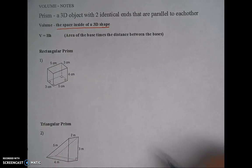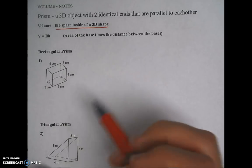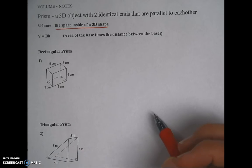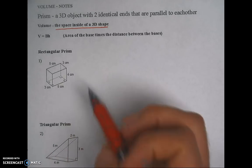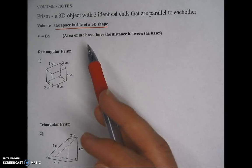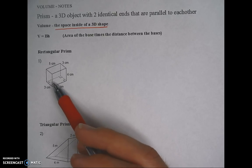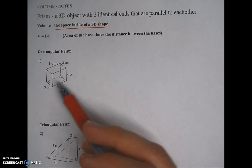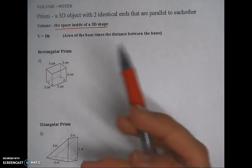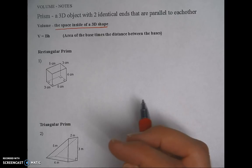There are two measurements we can find. Surface area is how much is on the outside — if you're talking about a box, it's how much cardboard it takes to build it or how much wrapping paper it takes to wrap it. Volume is how much is on the inside: how much water to fill a fish tank, how much air is in there, or how many objects you could fit inside.